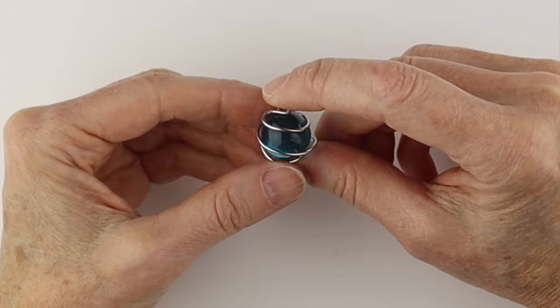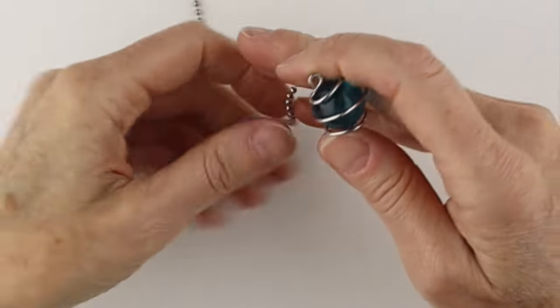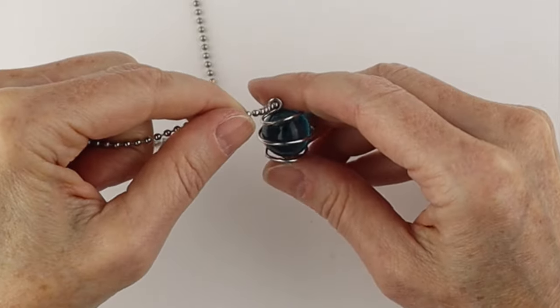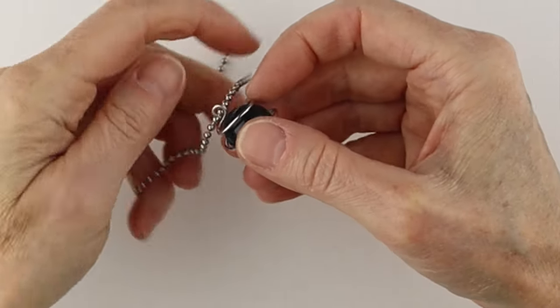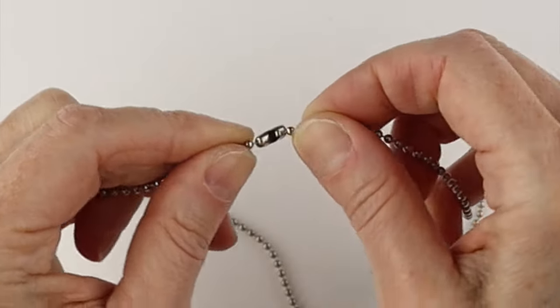Or you can get one of these funky ball chains like you see on umbrellas and just slide the chain through here. Make sure your loop is big enough and just attach it in there like that to make a funky little pendant on a ball chain.